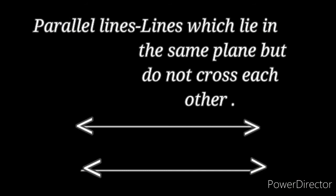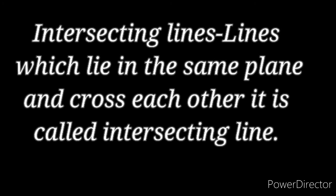An example of a plane is the surface of a blackboard or a wall. Now we learn about parallel lines: lines which lie in the same plane but do not cross each other are called parallel lines. Another concept is intersecting lines: lines which cross each other are called intersecting lines.